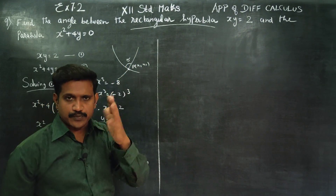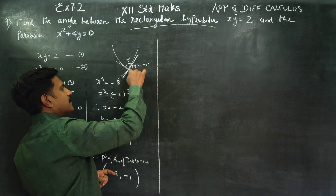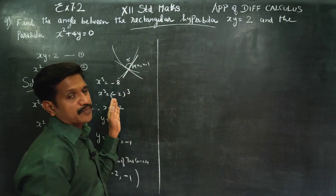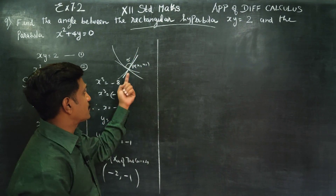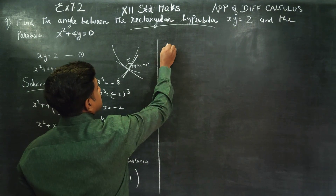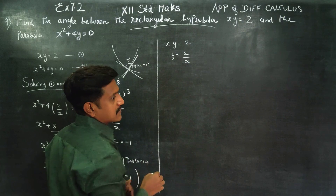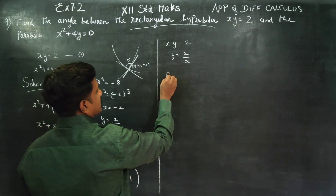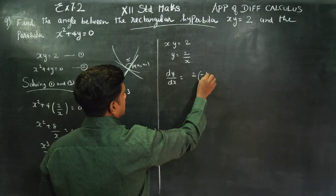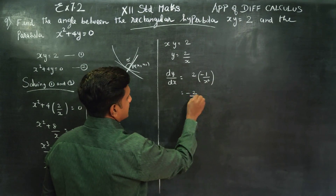After finding the point of intersection, we find the angle between the curves by finding the angle between the tangents. For the first curve, xy equals 2, so y equals 2 by x. Differentiating, dy by dx equals 2 times (minus 1 by x squared), giving dy by dx equals minus 2 by x squared.